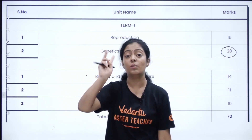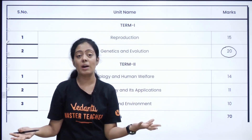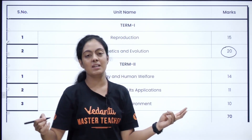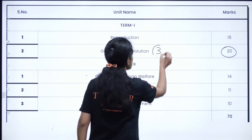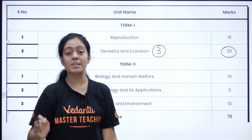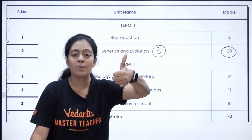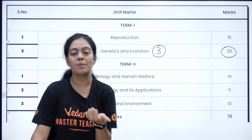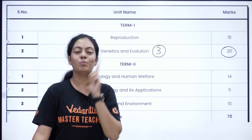Next, coming to Genetics and Evolution — it is a bonus unit with high weightage. The chapters are: Molecular Basis of Inheritance, Principles of Inheritance and Variation, and Evolution. Among these 3 chapters, the two most important are Molecular Basis of Inheritance and Principles of Inheritance and Variation. I have already completed a session on Molecular Basis of Inheritance — please do check it out.